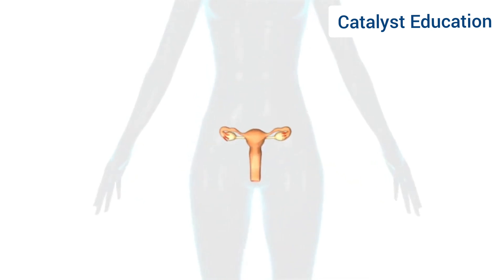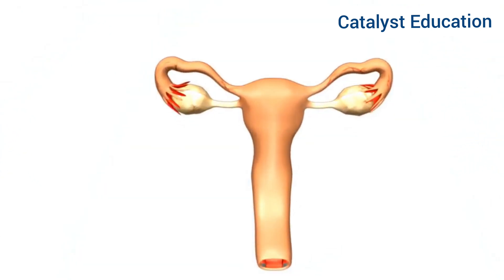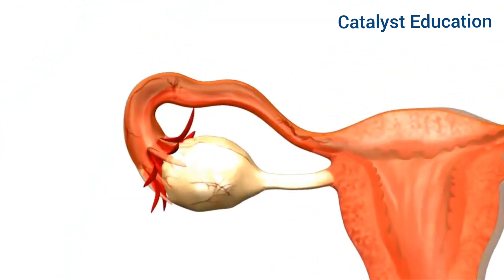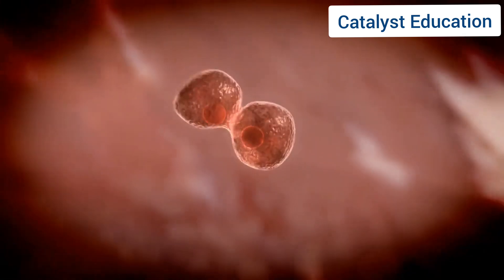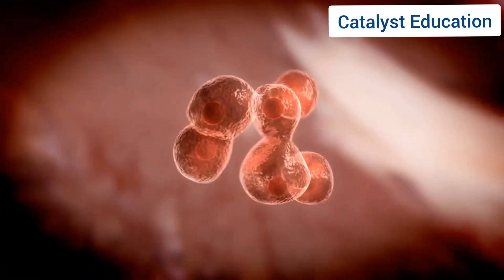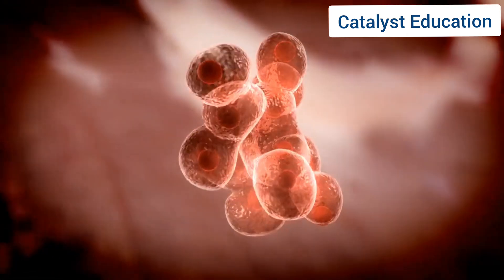Fertilization occurs when a sperm successfully penetrates an egg in the fallopian tube. During fertilization, genetic material merges, creating a zygote that begins cell division.